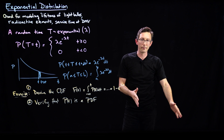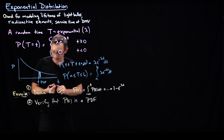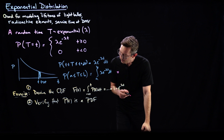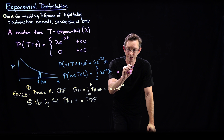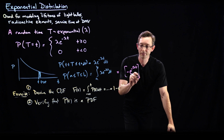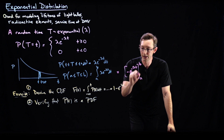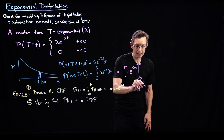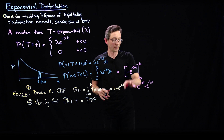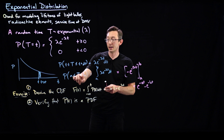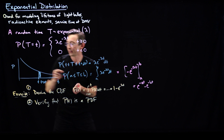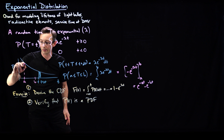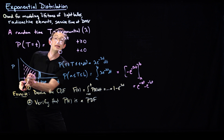I'm going to write out the answer here. The integral of lambda e to the minus lambda t is minus e to the minus lambda t, evaluated from limits a to b. This equals e to the minus a*lambda minus e to the minus b*lambda. That's a useful formula for computing the probability of your time of event being between a and b — it gives you the area under the curve, or the probability that my event happens in that range of time.